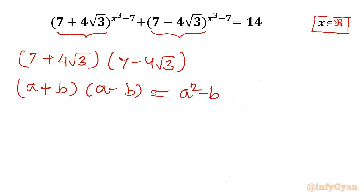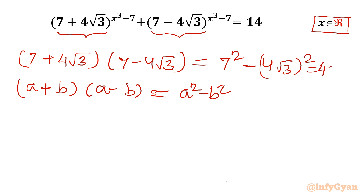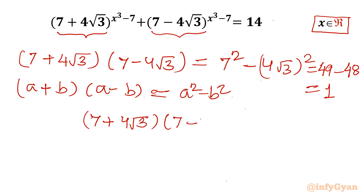So we can write a² - b². Applying this formula: in place of a it is 7, so 7² minus (4√3)². This value will become 49 minus 4² × 3, which is 49 minus 48, giving us 1. So 7 + 4√3 times 7 - 4√3 equals 1.